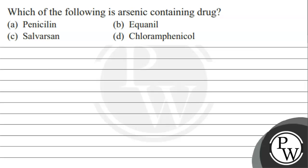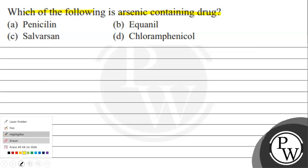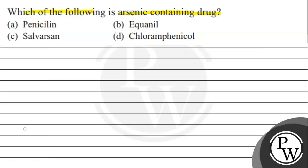Let's read this question. The question says: which of the following is an arsenic-containing drug? Option A: penicillin. Option B: equinol. Option C: silvarsin. Option D: chloramphenicol. The key concept for this question is arsenic-containing drugs.